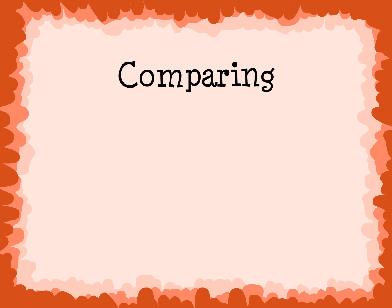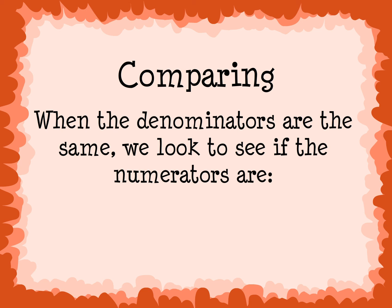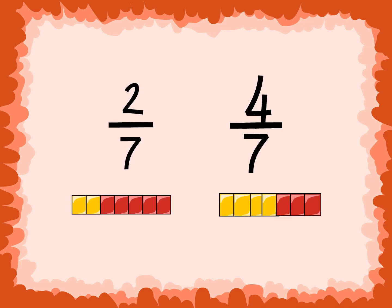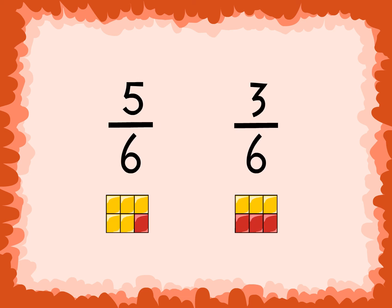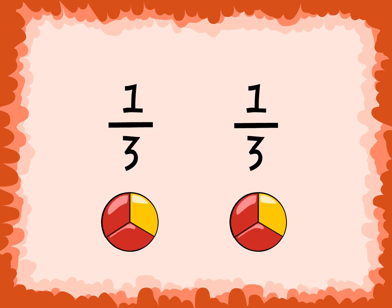Comparing. When the denominators are the same, we look to see if the numerators are greater than, less than, or equal to each other. 2 sevenths and 4 sevenths: 2 is less than 4, so 2 sevenths is less than 4 sevenths. 5 sixths and 3 sixths: 5 is greater than 3, so 5 sixths is greater than 3 sixths. 1 third and 1 third: 1 equals 1, so 1 third is equal to 1 third.